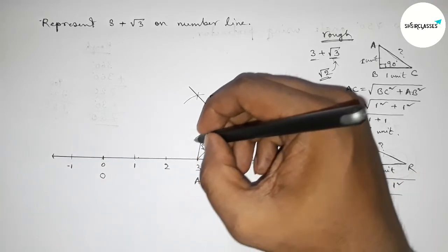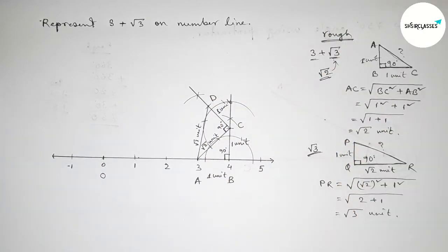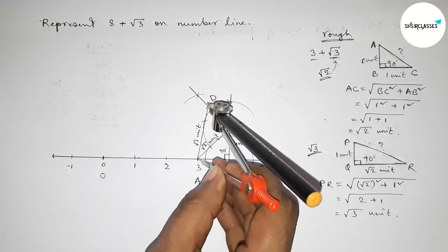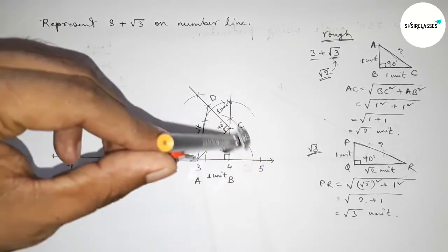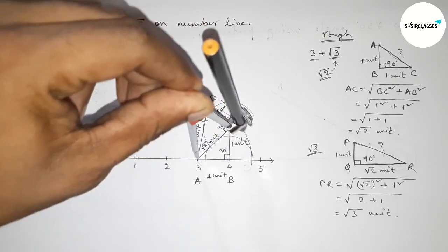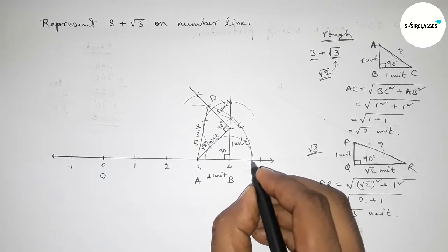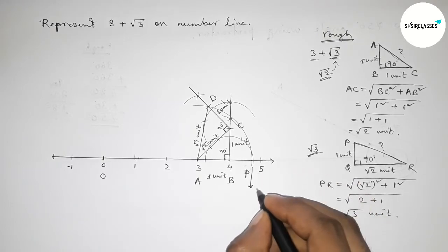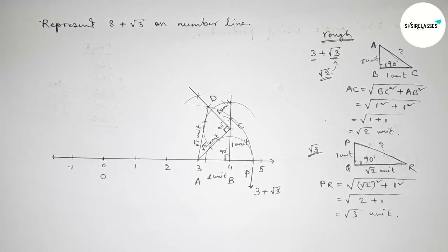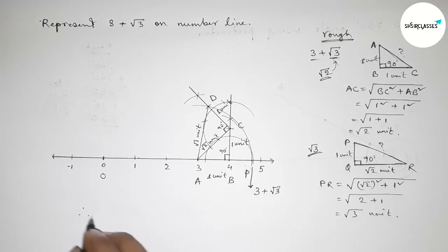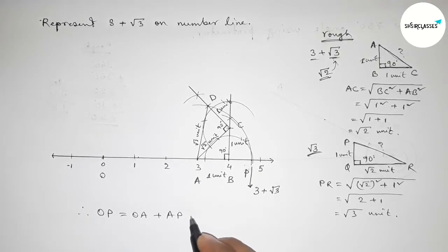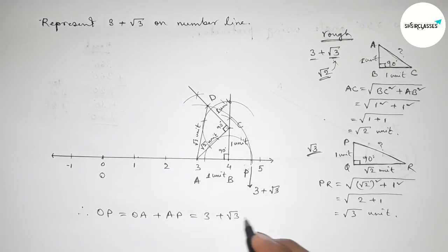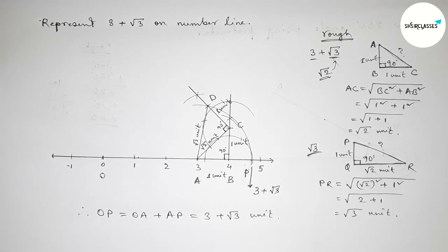Taking length AD equal to root 3 units using the compass and drawing an arc through point D to meet the number line at point P. Therefore OP = OA + AP = 3 + root 3 units. So point P represents 3 plus root 3 on the number line. That's all — thanks for watching. If this video is helpful, please share it with your friends.